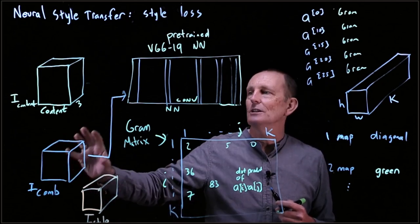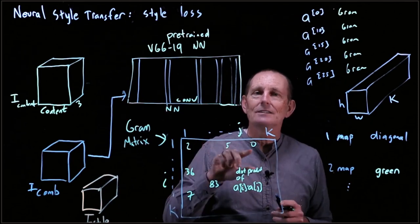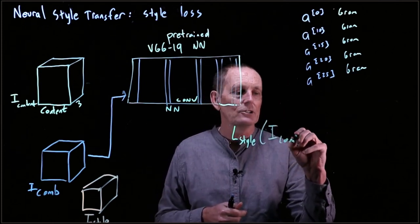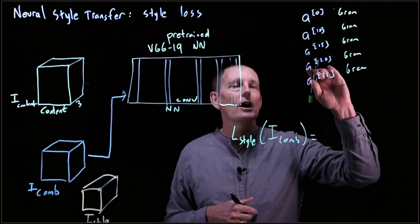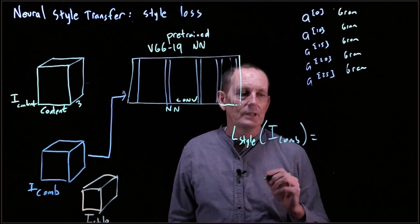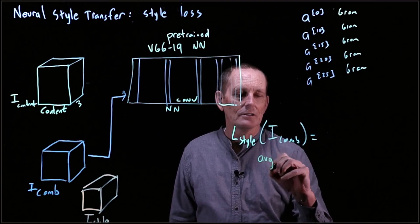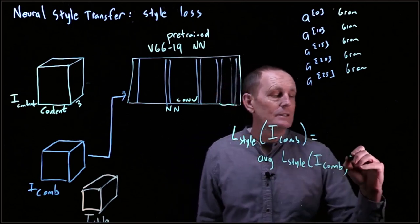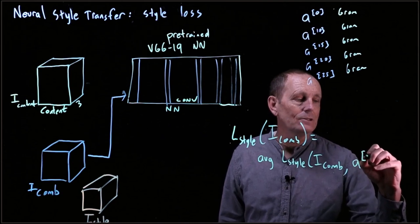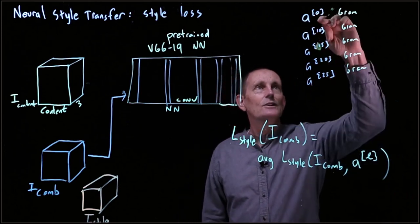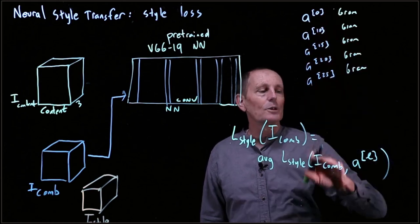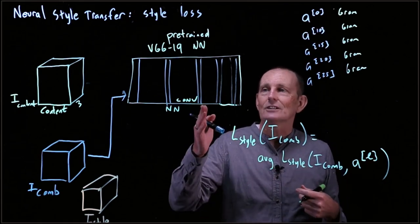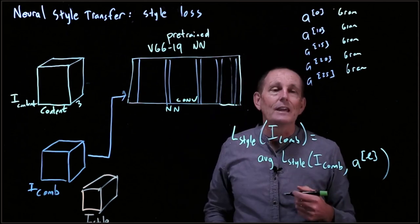We do the same thing for the combination image — compute those same Gram matrices — and then calculate the mean squared error between them. The style loss for the combination image is the average loss across all chosen layers, such as layers 1, 10, 15, 20, and 25. We could also use a weighted average if we find it useful to weight certain layers more heavily.